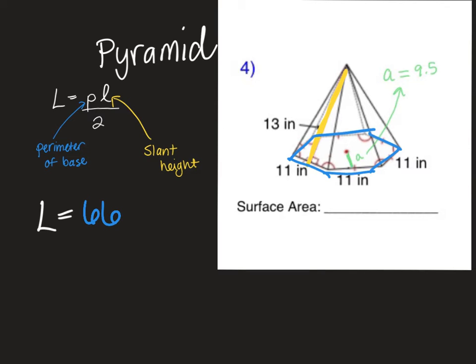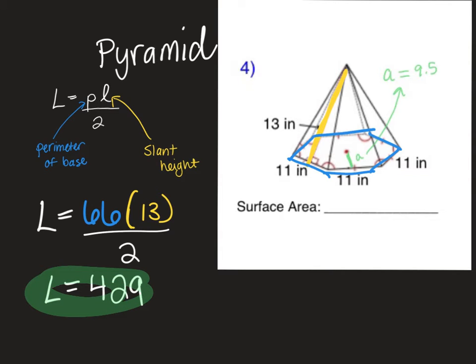All right. Now, our slant height is what? 13. And we divide it by two. So, we're going to do 66 times 13. Yep. Divide by, so you can do 33 times 13. Yeah. So, you get 429 for the lateral surface area. All right. So, that's L.